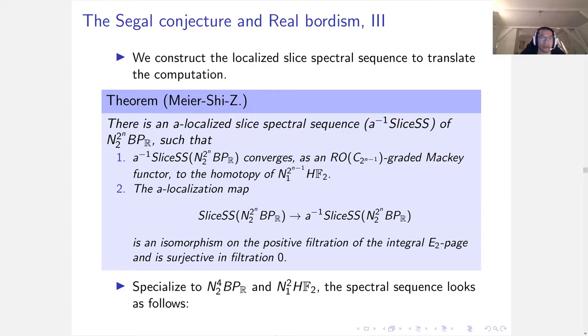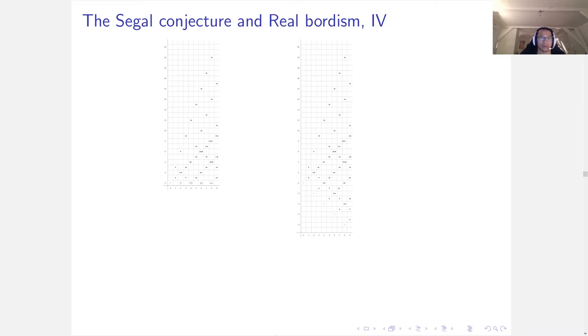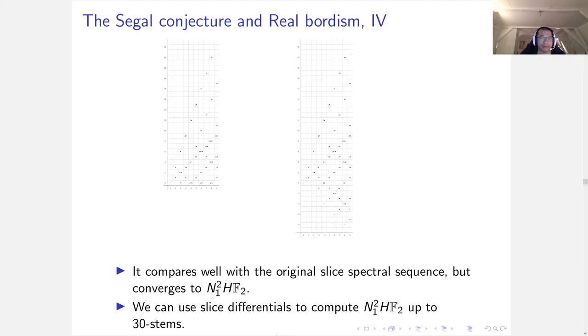Specialized to norm from C_2 to C_4 of BP_R, the spectral sequences look as follows. The left-hand side is the original slice spectral sequence of norm of BP_R. The right-hand side is the localized version. As we can see, there is a large portion which are isomorphic to each other, and the right-hand side converges to the norm of HF2. We can use the slice differentials from left-hand side to compute right-hand side up to 30 stems.